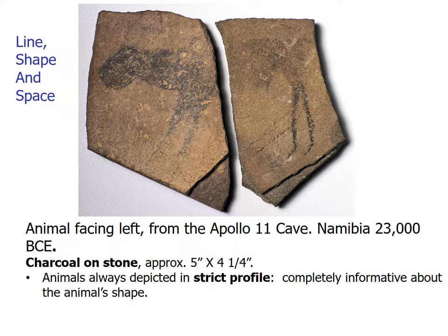Space is the feeling created by the way shapes or objects are placed. Positive space is the space taken up by the object — in the animal facing left, the animal itself is the positive space. Negative space is the empty space all around the object. This animal facing left is rendered in charcoal on stone.